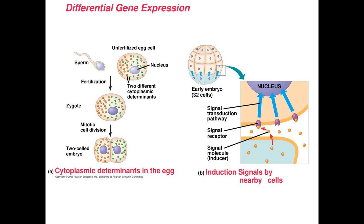Furthermore, when the early embryo contains a number of cells, in many cases, the cells at one end produce signals that influence the gene expression of every cell. Since this is produced at one end, the signals are distributed in a gradient, becoming less concentrated the further you are from the site of their production. Hence, the amount of signal that is perceived tells each cell how far away it is from this site, telling them where they are positioned within the embryo.